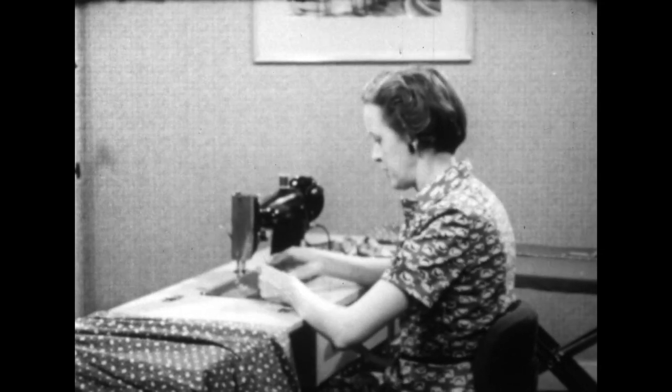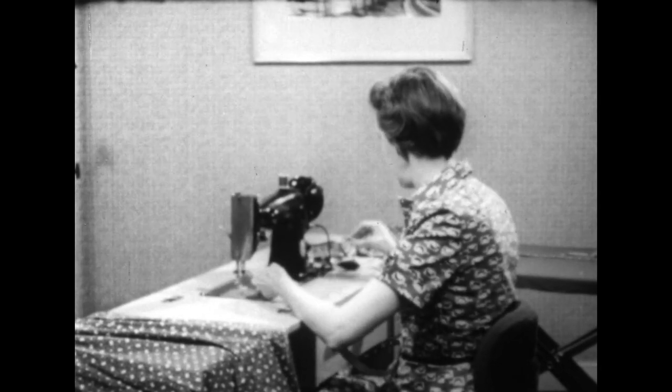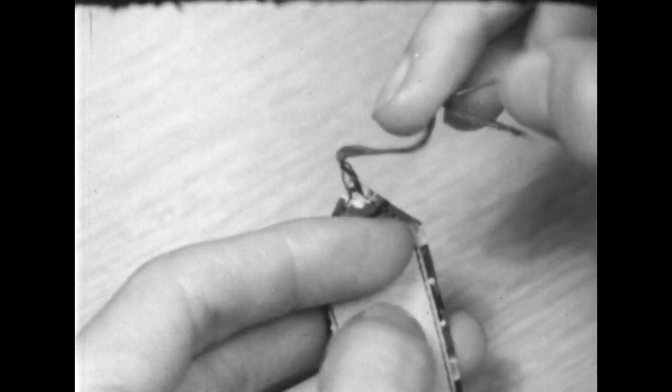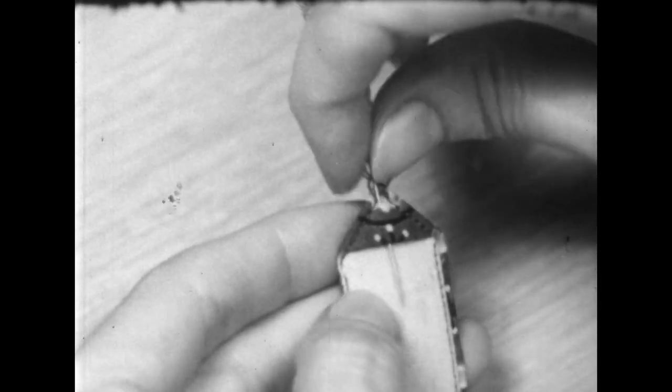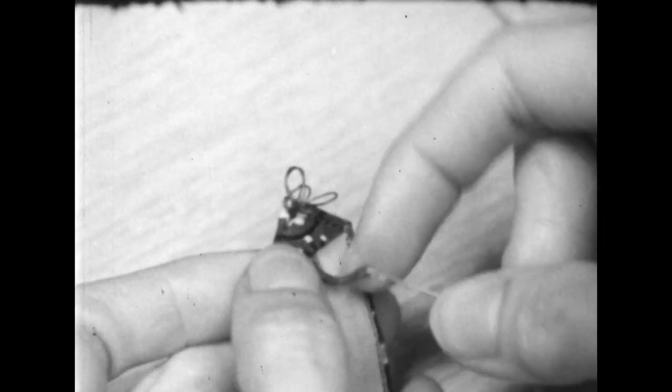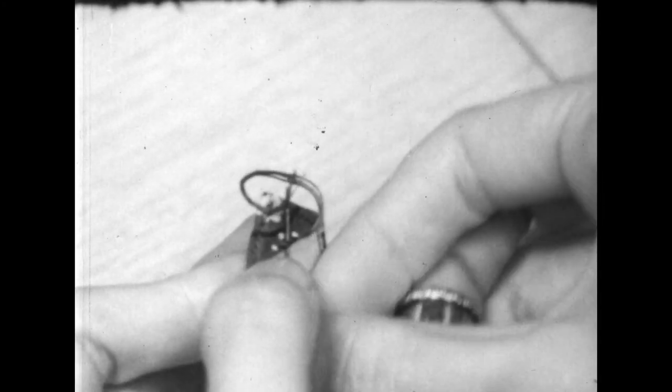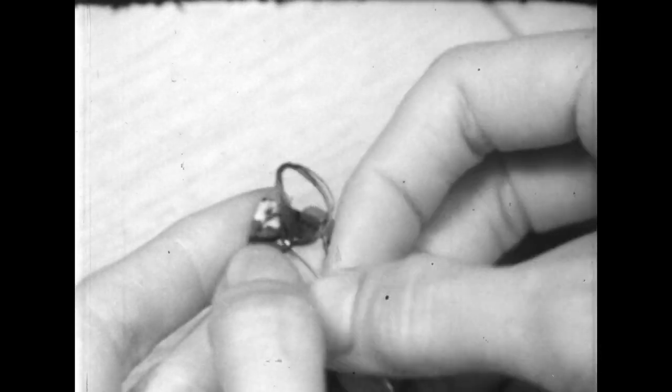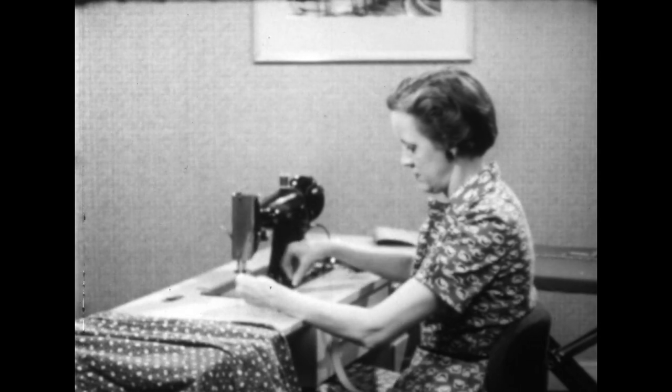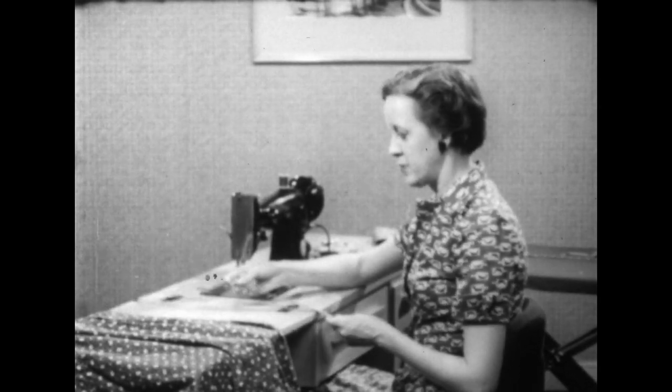We have four threads at the point where we started both of our rows of stitching. We don't want to knot, so the best thing to do is to pull those threads through to the wrong side, thread them into a needle, and then bring them down between the fabric and the belting and tack them in place. And here's the belt ready for the buckle.